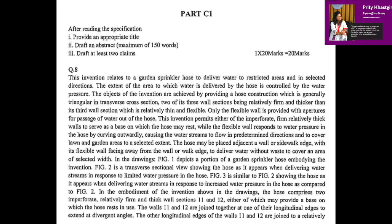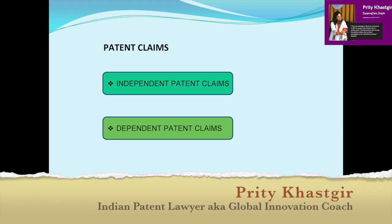This is a very interesting application. In Part C1, the allocated marks is 20 marks. After reading the specification, you have to provide an appropriate title, draft an abstract of maximum 150 words, and draft at least two claims. Generally when the question paper talks about two claims, the first claim would be an independent claim and the second would be a dependent claim. We have already discussed the importance of independent and dependent claims in our previous video.